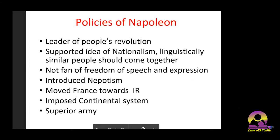Now the policies of Napoleon — please make note of this slide. First: he was a leader of the people's revolution. He came from the Third Estate; people saw him as an alternative to all their problems. He overthrew the Court of Directory and became the First Consul of France. People looked at him thinking he would solve the chaos in France. Second: he supported the idea of nationalism.